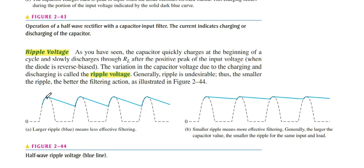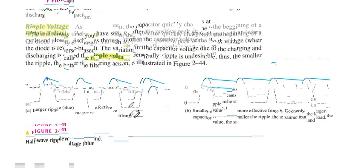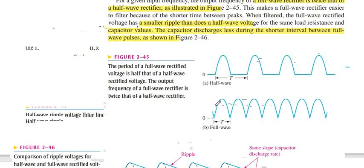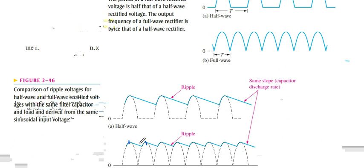Ripple voltage. Ripple voltage is greater when we use the smaller value of capacitors. When we use large capacitors, we get smaller ripples. We use half-wave rectifiers. What happens when we use full-wave rectifiers? Full-wave rectifiers give smaller ripples as compared to large ripples or large slopes.